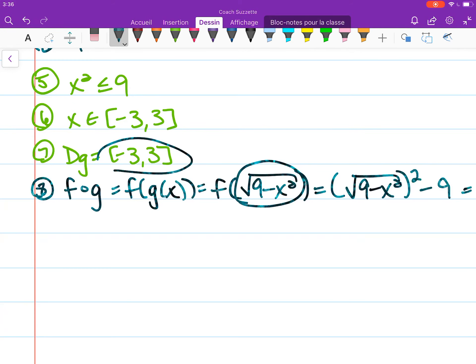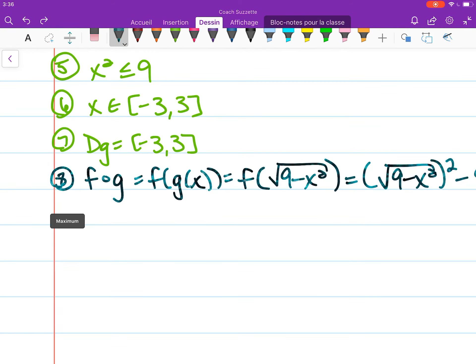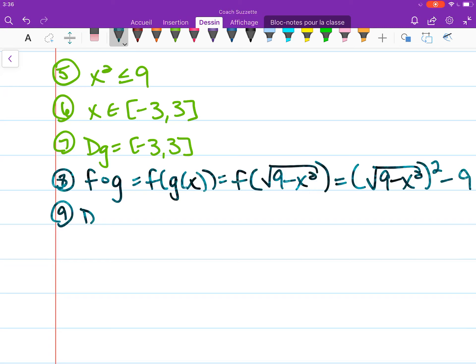So the domain for f(g(x)) is the set of all real numbers from -3 to 3, or [-3, 3]. And we're done.